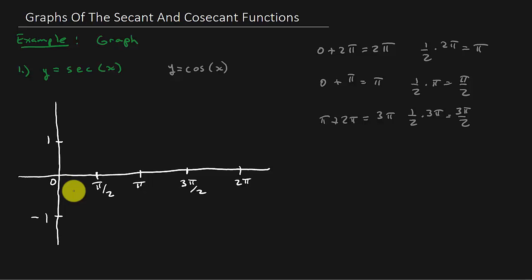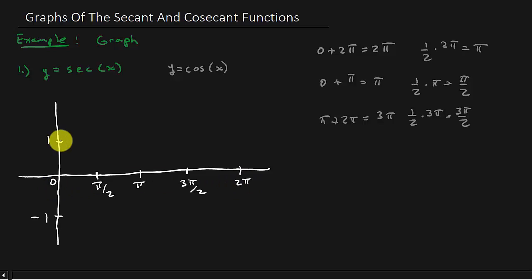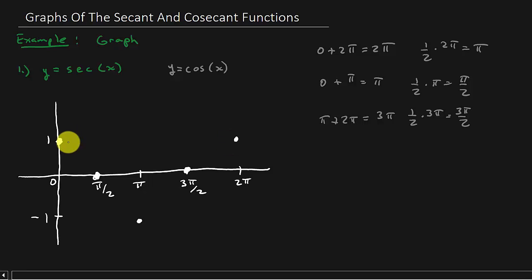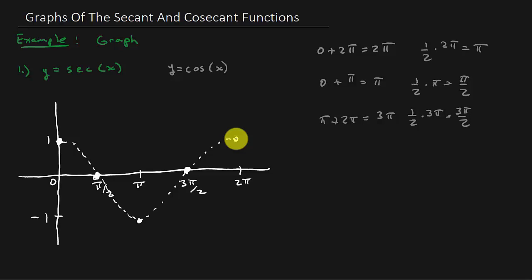Now let's sketch in the cosine function. Cosine starts at its maximum value, goes to 0, then to its minimum value, back to 0, then back to its maximum. Make sure you draw the cosine function with a dotted line — you're not drawing it solid. The dotted line means it's hidden; we're using cosine only as a guide.